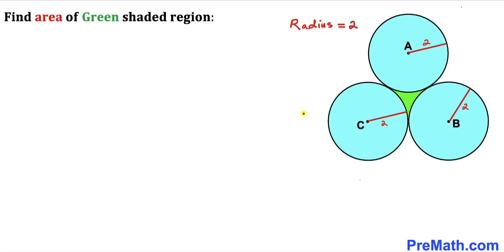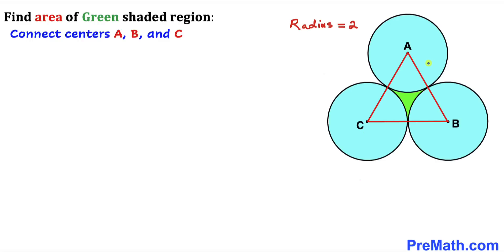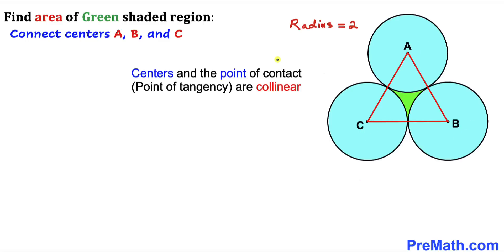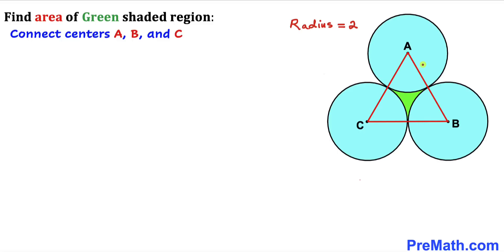Let's get started with the solution. Our very first step is to connect all three centers of these circles. I have connected centers A, B, and C. According to this fact, the centers and the point of tangency lie on the very same line — in other words, they are collinear. Since the radius for all circles is 2, the total distance A to B is 2 plus 2, which equals 4.